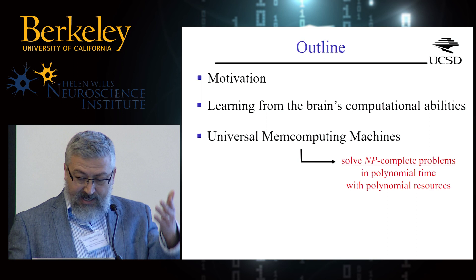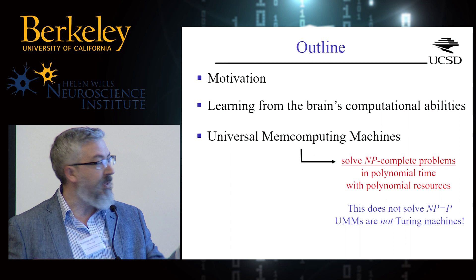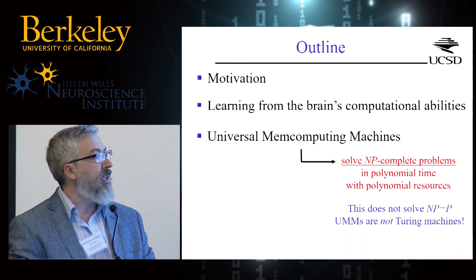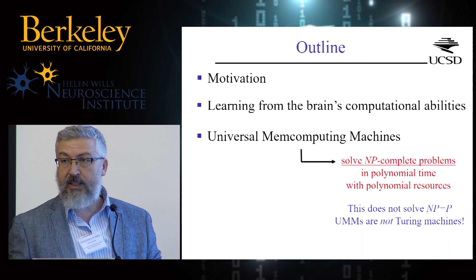I already hear some noise from the computer scientists. We are not proving NP equal to P, because the question of NP equal to P has meaning only within the Turing paradigm. If you are outside the Turing paradigm, this question has no meaning.